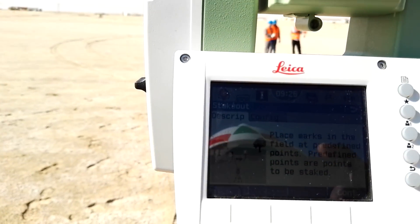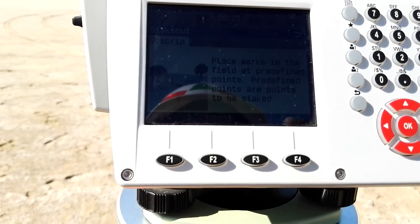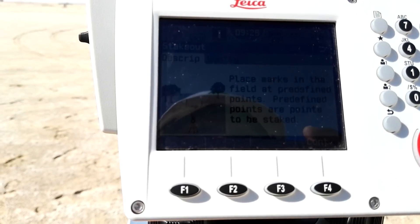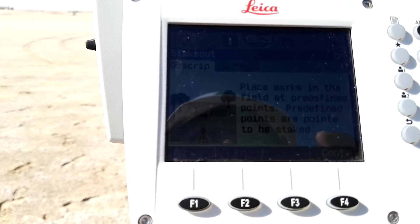So there is two things: one is a description and one is configuration. So description already you can see there is writing please mark in the field the prided points.